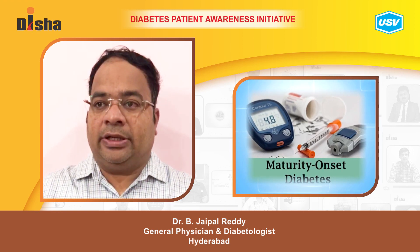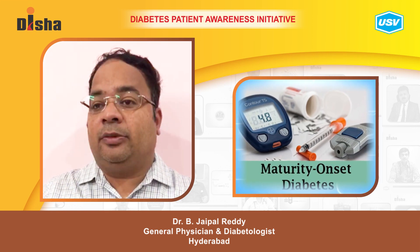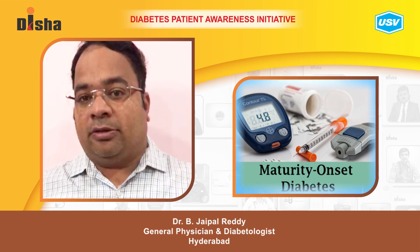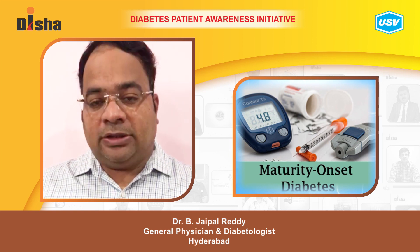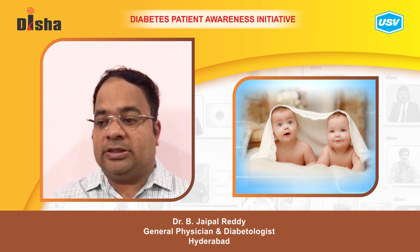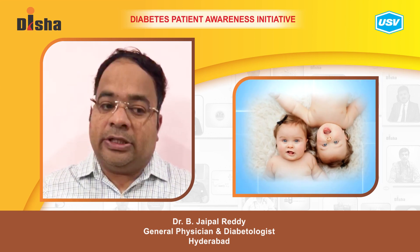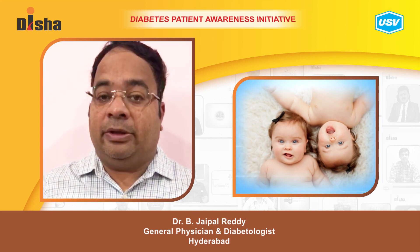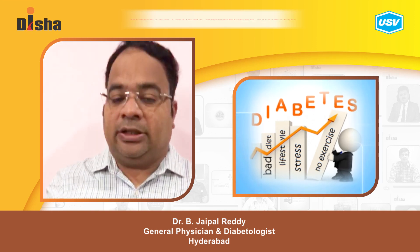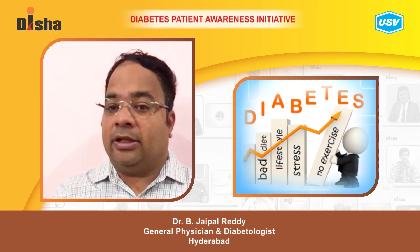One important disease is MODY — Maturity Onset Diabetes of the Young — which is an inheritable form of diabetes caused by a mutation. Even in identical twins, we will not see 100% inheritance; one child may be affected and one may not, because these are also influenced by environment, diet, and other factors.